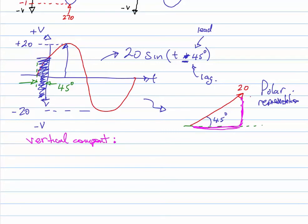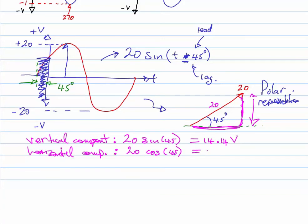Some basic Pythagoras here, we're trying to find what is this height and as you know from your school days it's going to be that hypotenuse there which is 20 times the sine of 45 which should give us 14.14 volts. By the same token the horizontal component is quite simply 20 times the cos of 45 degrees which again gives us 14.14 volts.